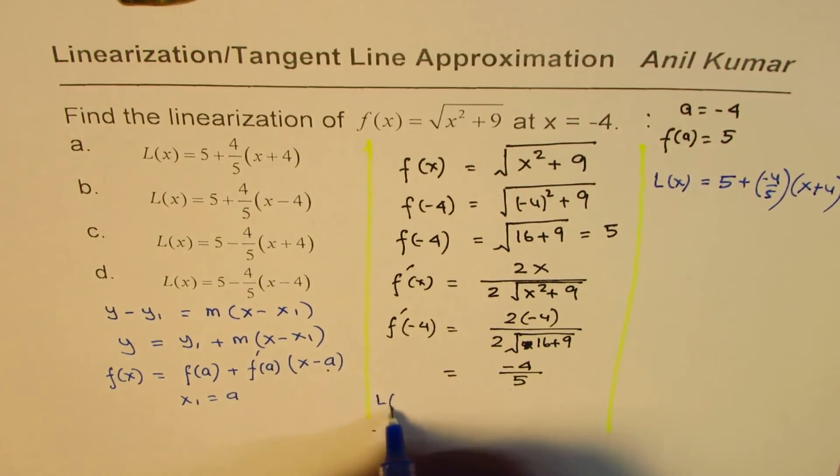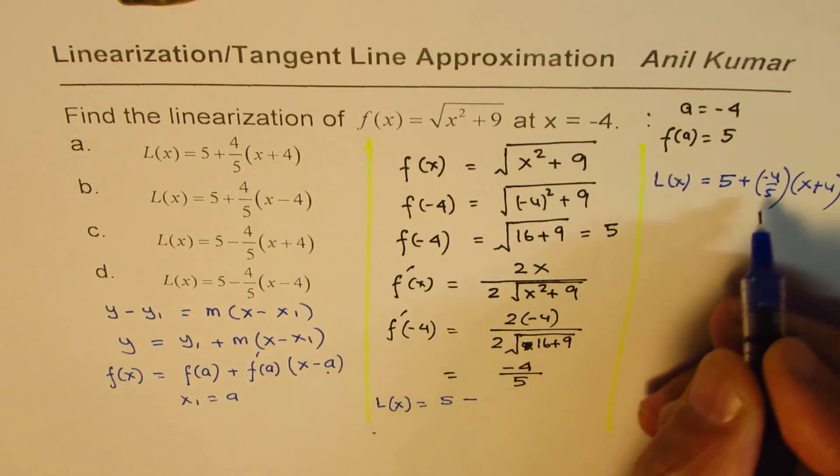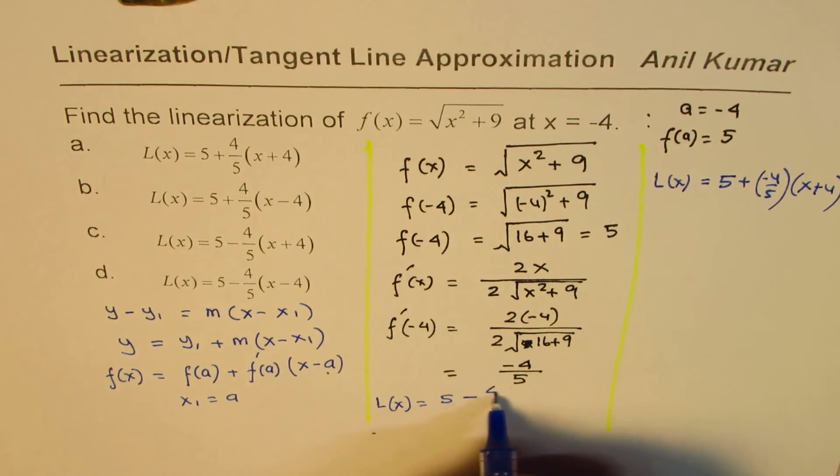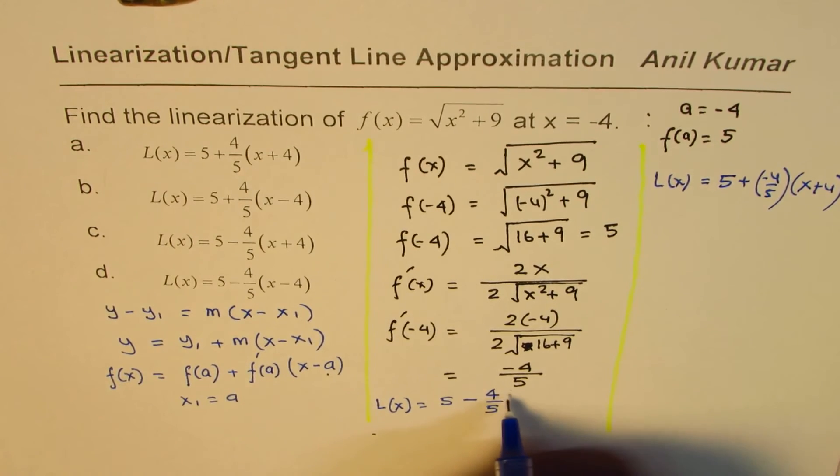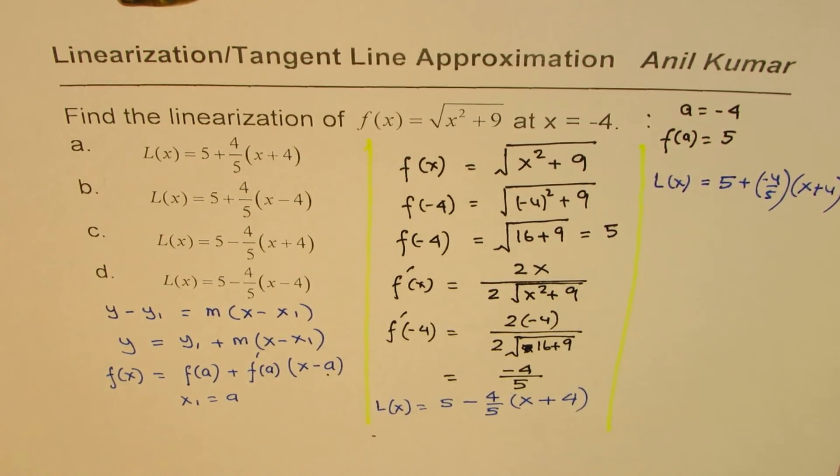We can say, let me write down here. So we have L(x) equals to 5 minus, because the slope is negative, 4 over 5, x minus minus becomes plus 4, so we write plus 4 here. So that becomes our formula.